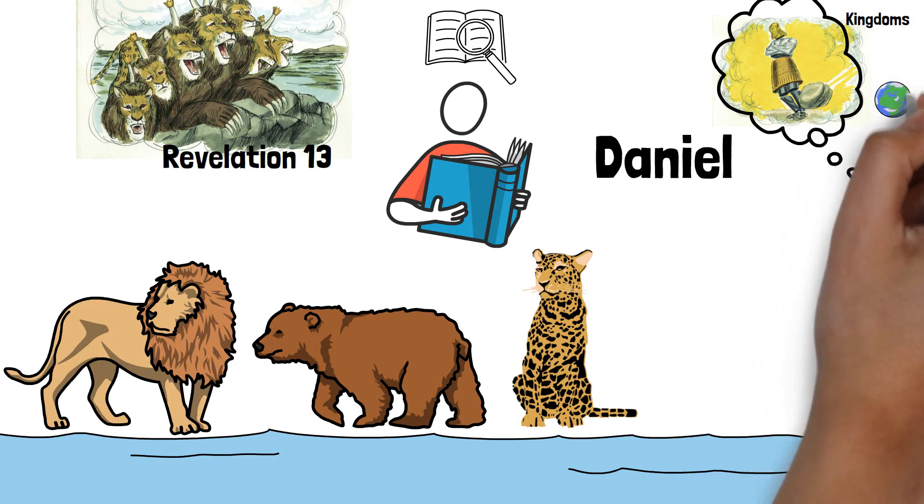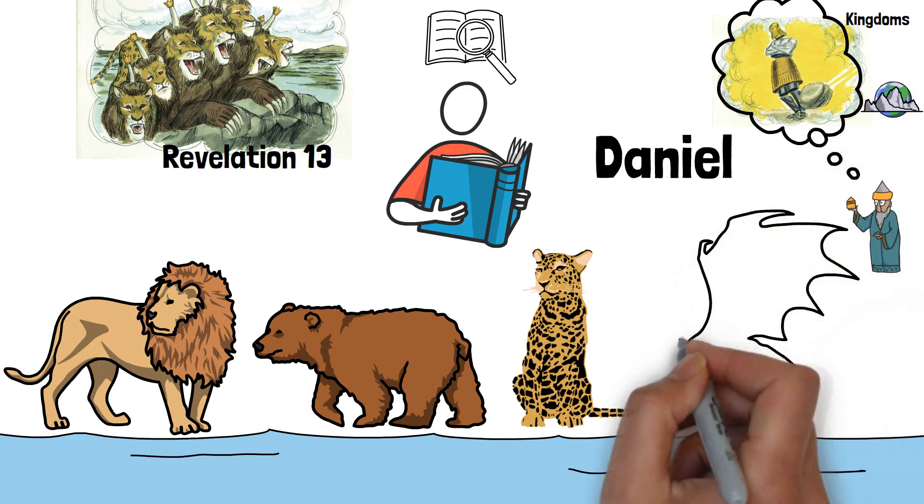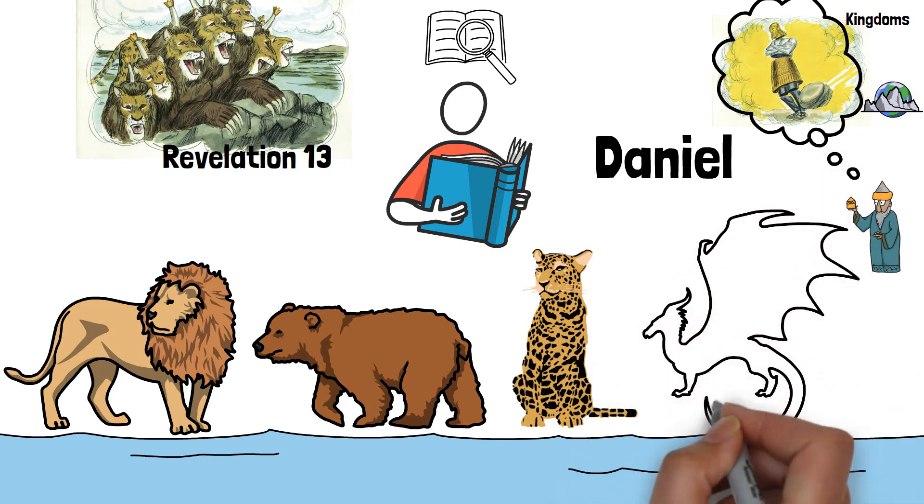And then finally, the Iron Kingdom, at the end of its reign, will see a rock strike that statue on its feet, and the entire statue will come crumbling down, upon which the rock will become a great mountain that will cover the entire earth.